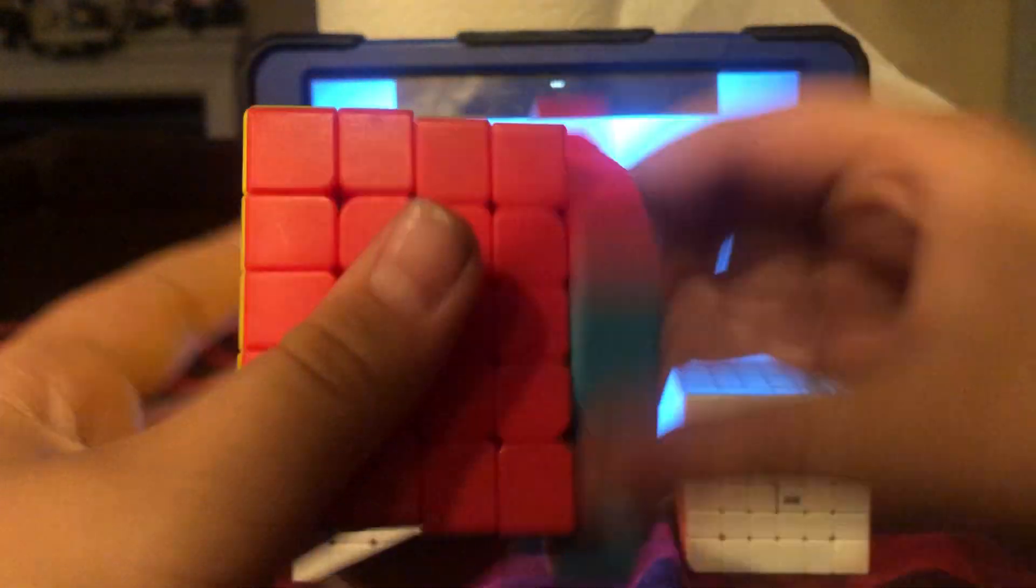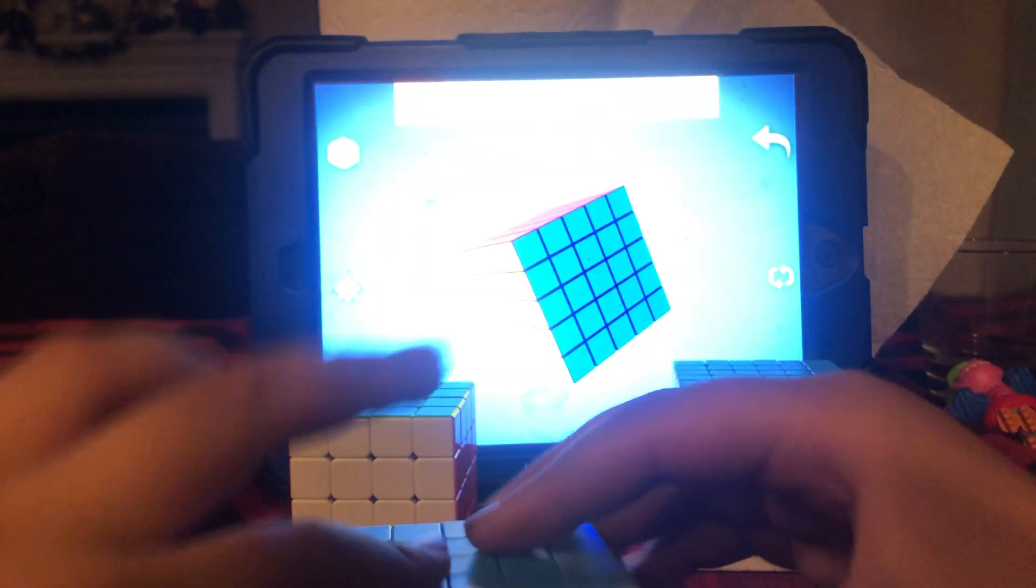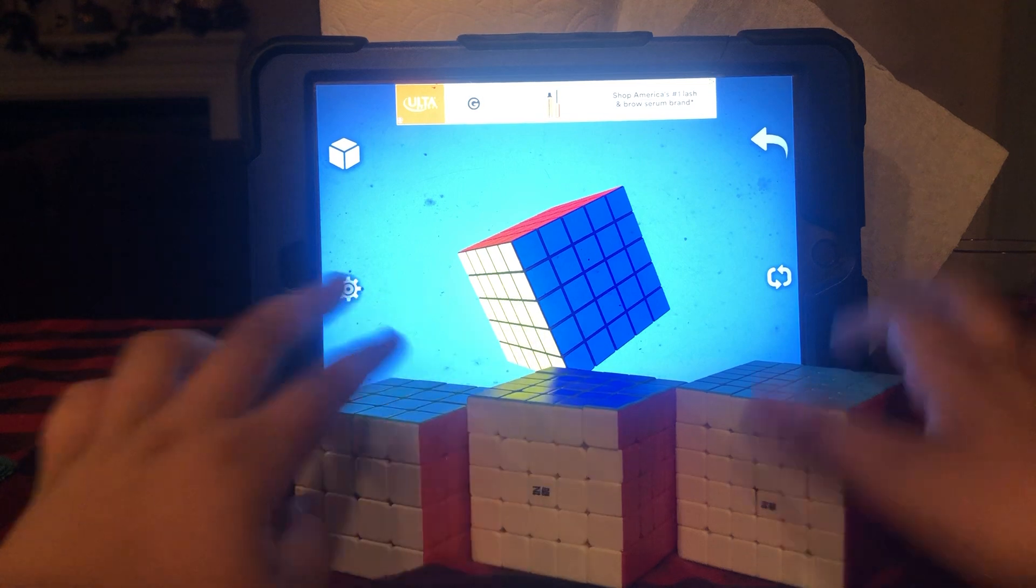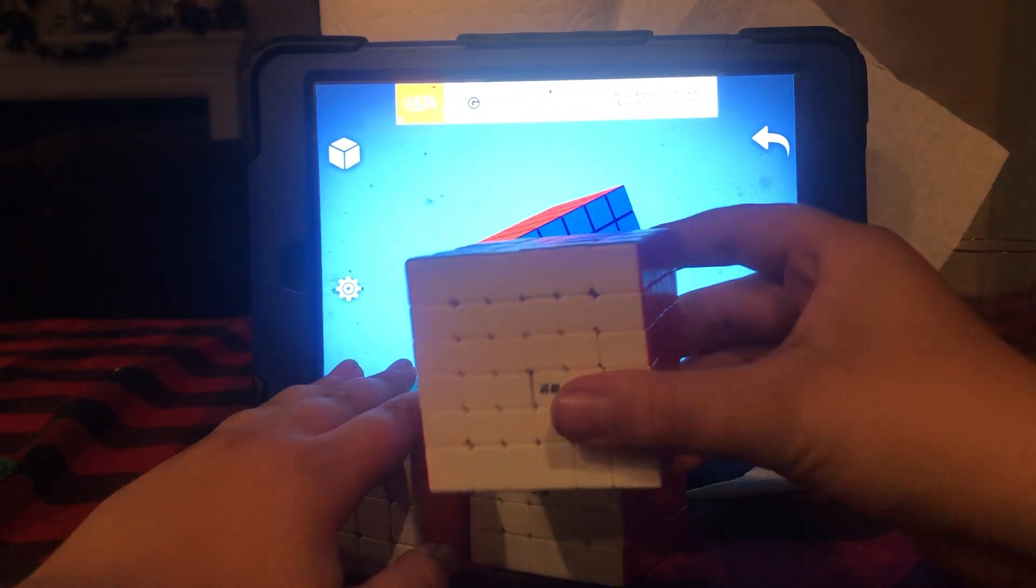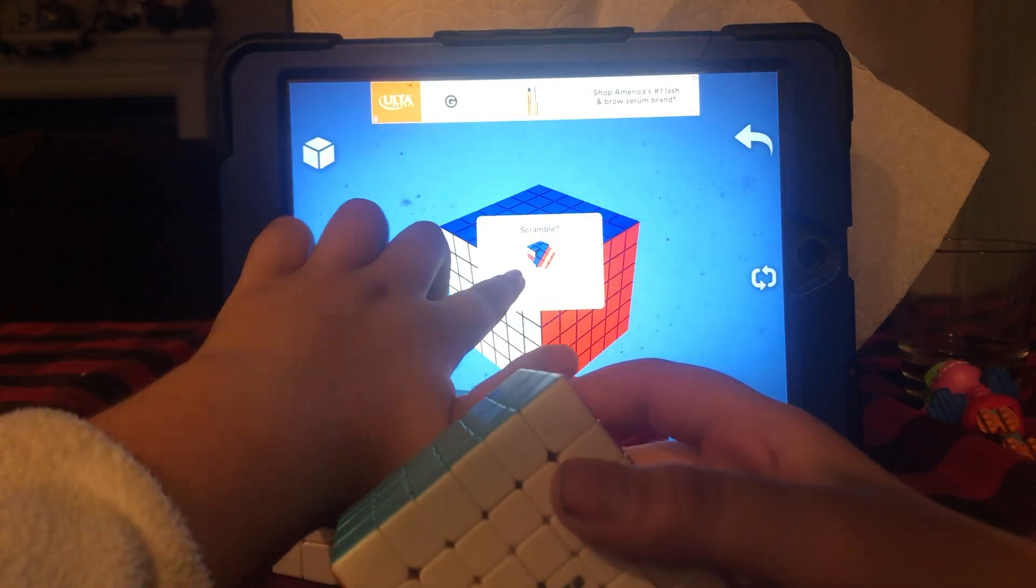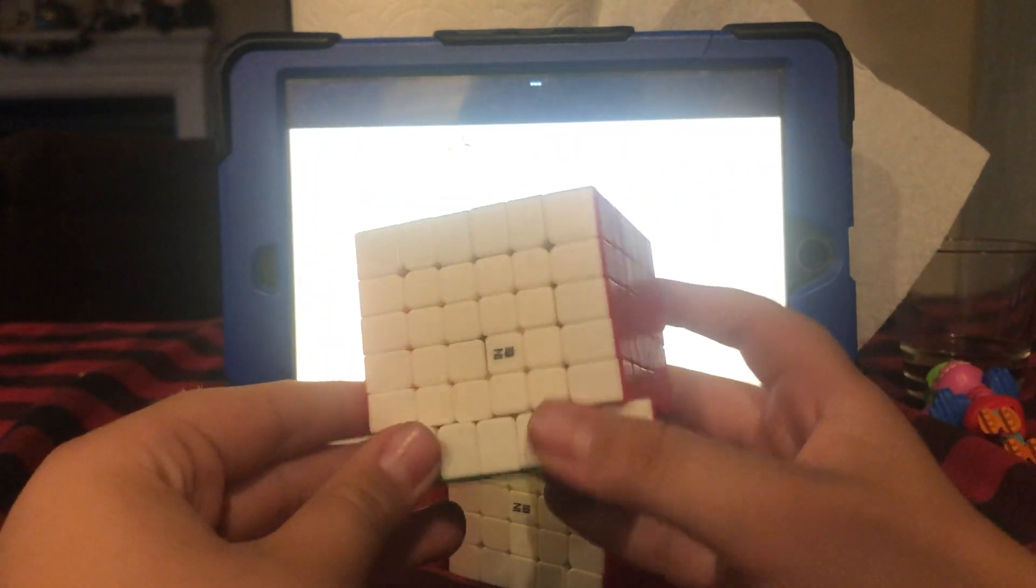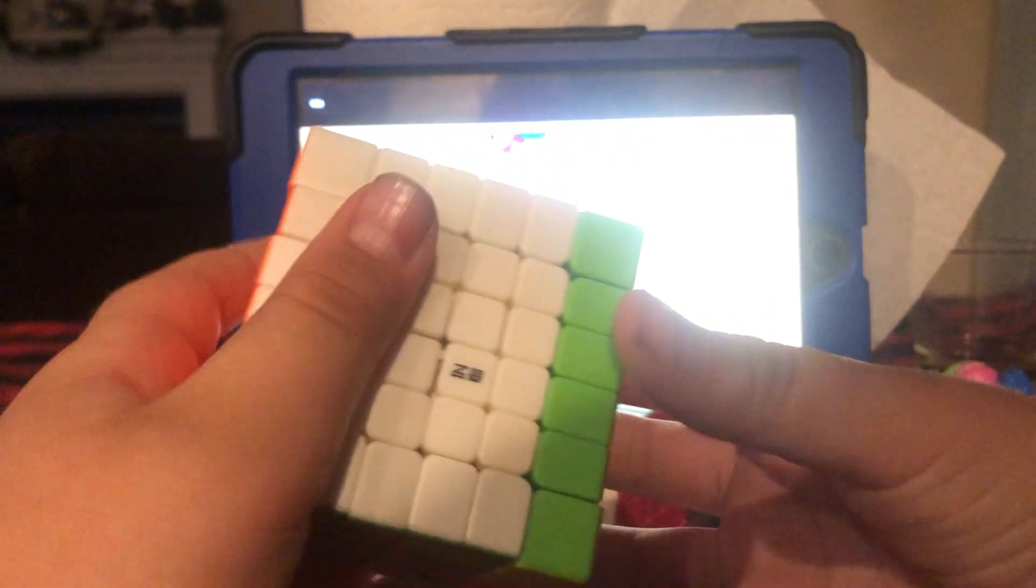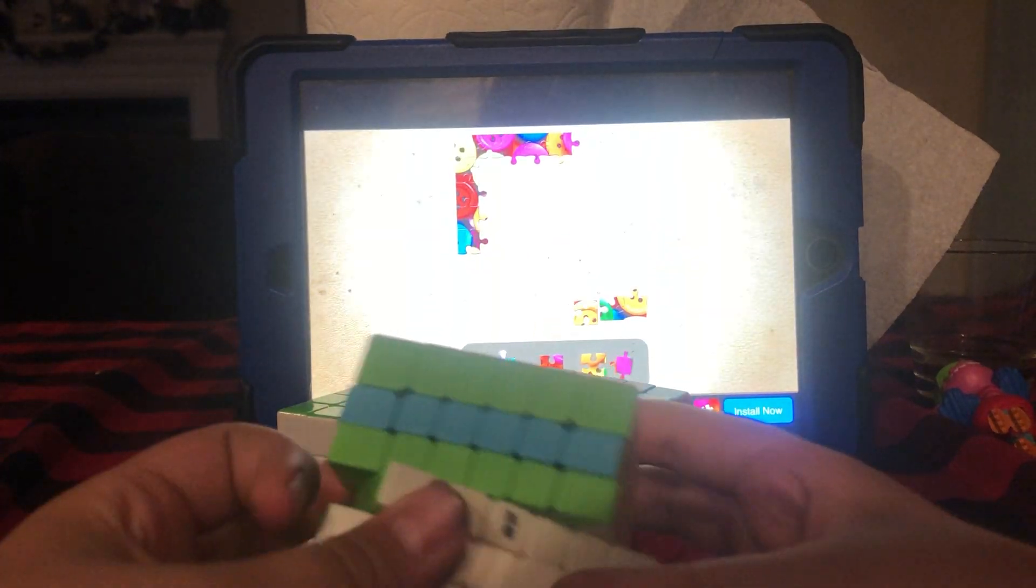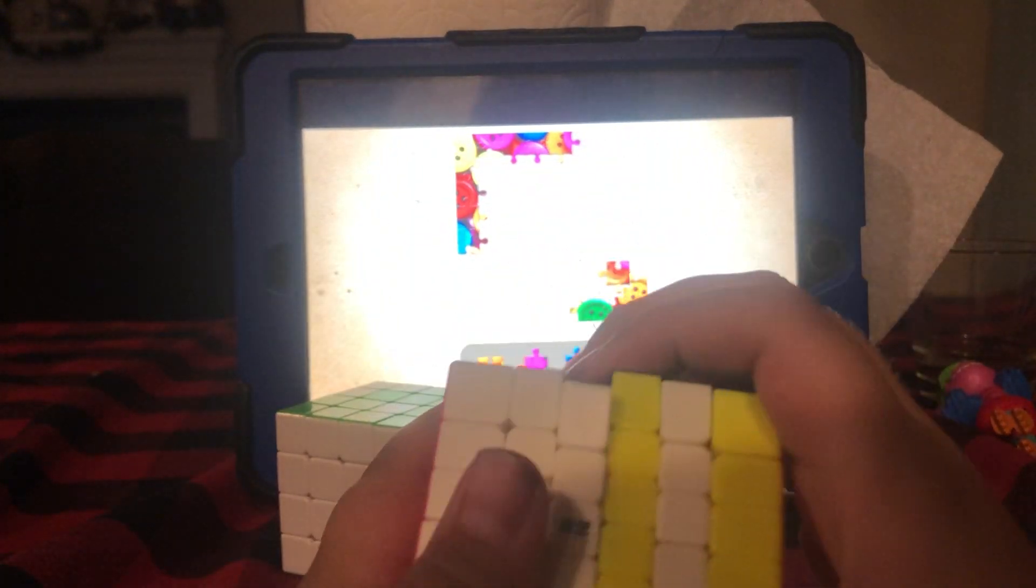That's it for the 5x5, which is also known as the Professor's Cube. Now the final one, the 6x6. The 6x6 is also known as the V-Cube, which was released by V-Cube in 2008. It is also known to be used for competitions.